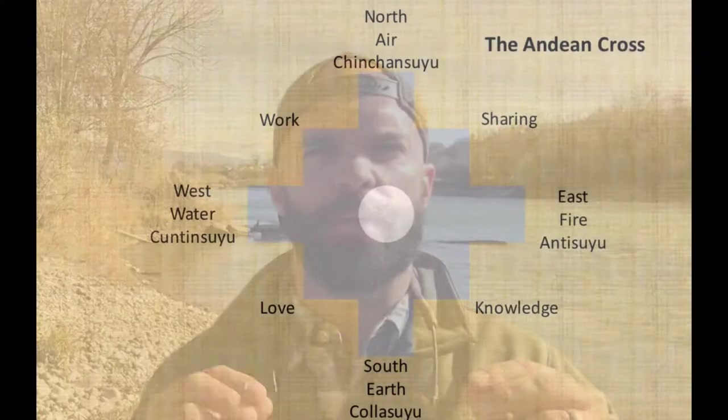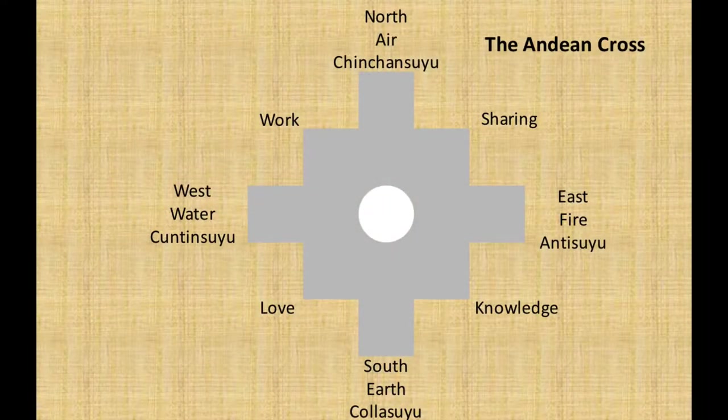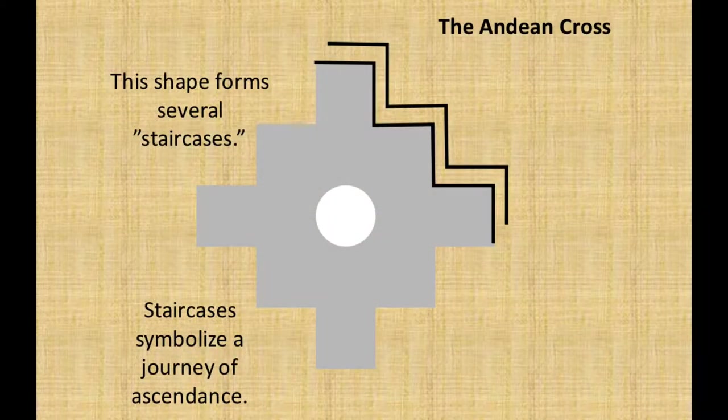You also have the four corners between the four-armed cross. I've seen in some places that these represent work, sharing, love, and knowledge. The four-armed cross and these in-between corners together would look like four sets of stairs, and stairs are a design you see over and over again in Andean history, mythology, and spiritual beliefs.